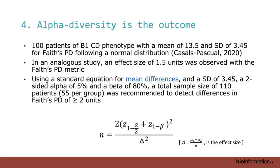Next, alpha diversity as the outcome — this is the most straightforward scenario because alpha diversity is often normally distributed with a mean and standard deviation. This example is from the Castle Pascal 2020 paper on Crohn's disease, where their Faith's PD (an alpha diversity measure) had a mean of 13.5 with a standard deviation. You plug it into the same equation, determining a minimally clinically meaningful difference of 1.5 units in the Faith's PD, and calculate the n per group or total n for two groups.